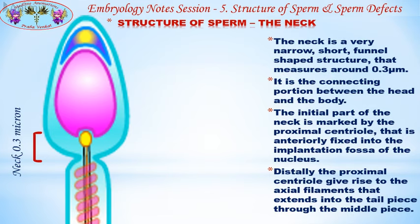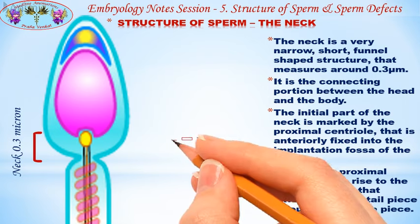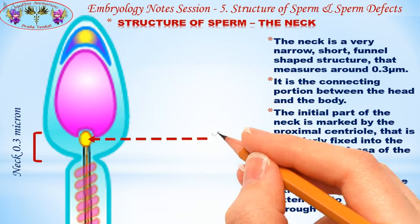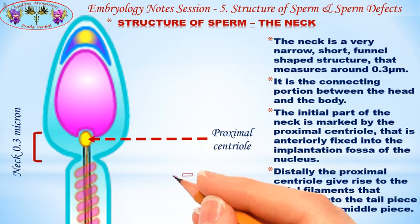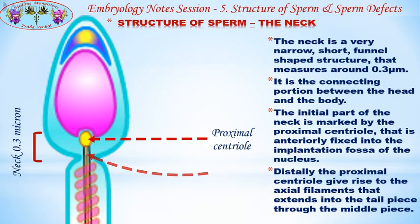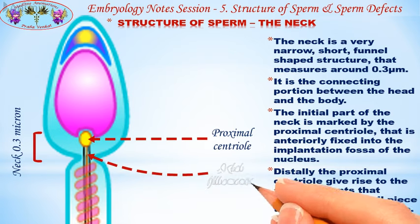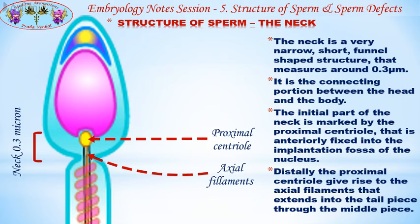The next part is the neck. The neck is a very narrow, short, funnel-shaped structure that measures around 0.3 microns. It is the connecting portion between the head and the body. The initial part of the neck is marked by the proximal centriole, which is anteriorly fixed into the implantation fossa of the nucleus. Distally, the proximal centriole gives rise to the axial filaments that extend into the tail piece through the middle piece.